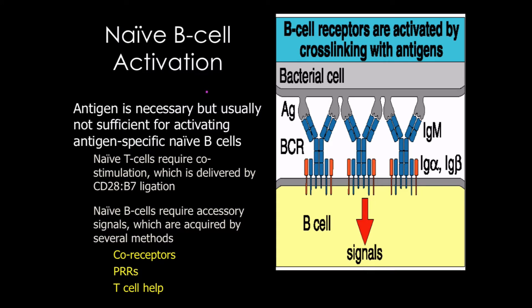For naive B-cell activation, this is very similar to what we saw with naive T-cell activation, in which we had a secondary signal in the naive T-cells context as the CD28-B7 ligation. But in this context, we have the naive B-cells, which usually involves not only the receptor interacting with its ligand, but sometimes a secondary signal — the co-receptor, pattern recognition receptors, T-cell help, or even other cell help that we're just now starting to learn about.